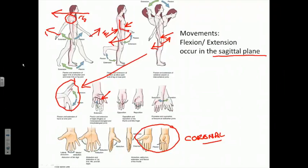We'll obviously have to pay attention to that going forward. A couple of other actions are illustrated here that are not just movements in the sagittal plane — we'll explore them as we deal with specific joints. The bottom line so far is: generally speaking, except for the thumb, when you move a portion of the upper limb in the sagittal plane, you're flexing or extending that body part at various joints in the upper limb.